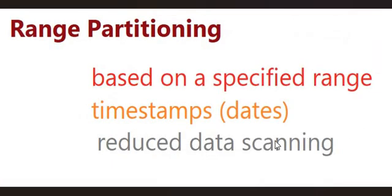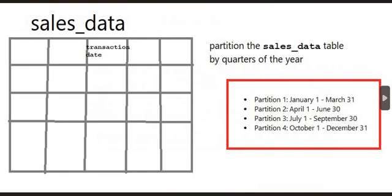So let's first talk about range partitioning. Range partitioning involves dividing data into partitions based on a specified range of values, as its name specifies. This is particularly useful for data with natural ordering, such as timestamps where data involves dates, or numerical ranges. Queries that involve ranges benefit from reduced data scanning. Let me give you an example to show how data scanning is reduced in distributed query processing using range partitioning.